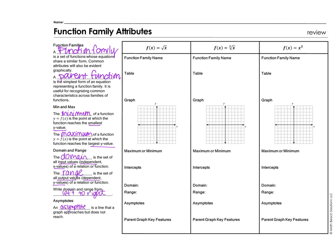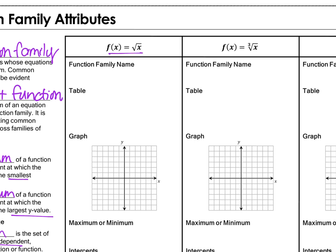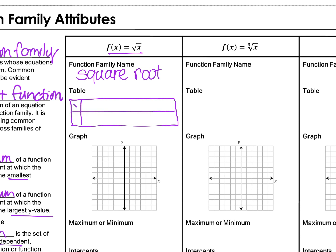We're going to fill in some information. We're given this equation — the function family is square root — and we're going to make a table for this parent function. Starting with negative 1: if I plug in negative 1, that would be undefined. Then 0: square root of 0 is 0. Next, 1: square root of 1 is 1. I'm just picking values; you could plug in any numbers you wanted. Square root of 4 is 2, and square root of 9 is 3.